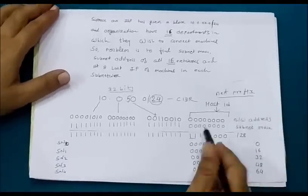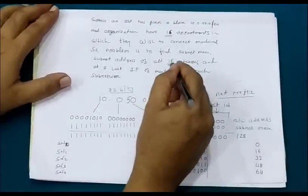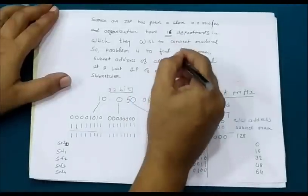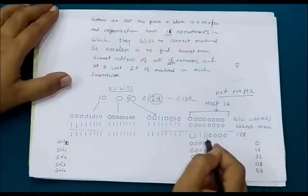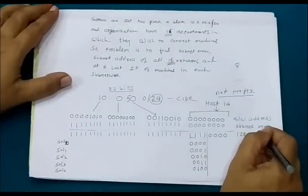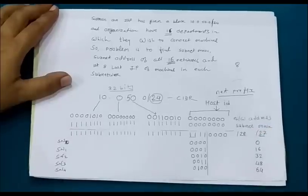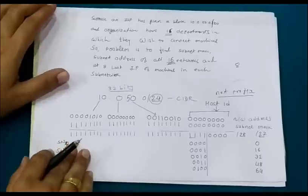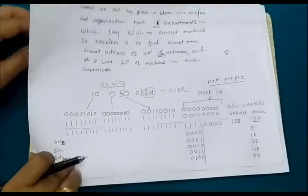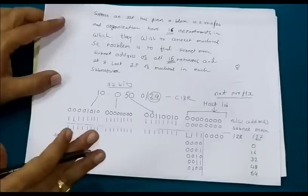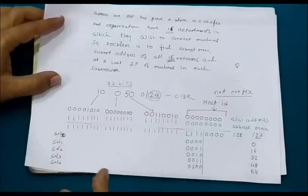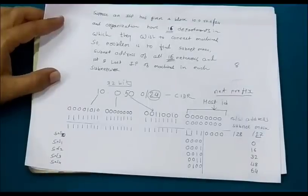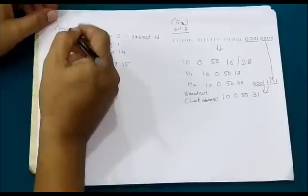How many bits to take depends on the number of subnets you want to create. If asked to create 8 subnets instead of 16, you would take 3 bits and the mask length would be /27 instead of /28. Now I want to write the first IP address of the first subnet, the last IP address, and the broadcast address, and then the subnetwork address of each block.